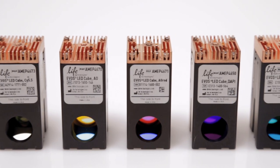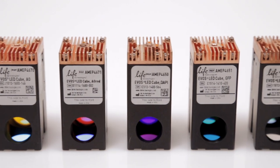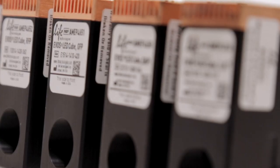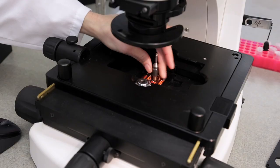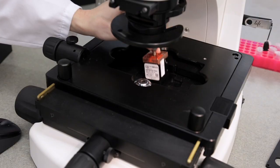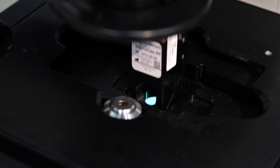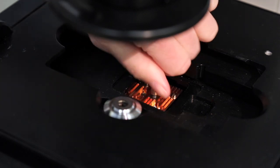Over 20 EVOS light cubes are available for a wide variety of research applications, and each EVOS FL system can hold up to 4 light cubes. To change light cubes, simply pull out the light cube with the provided tools and replace it with your new light cube of choice.